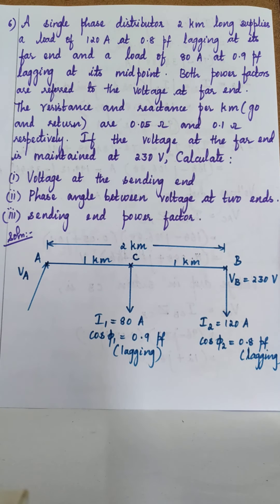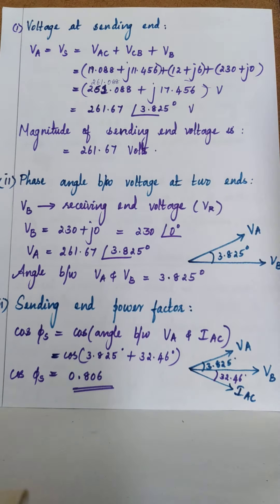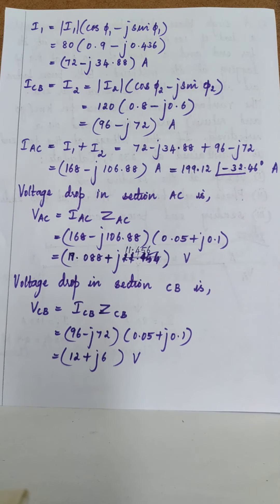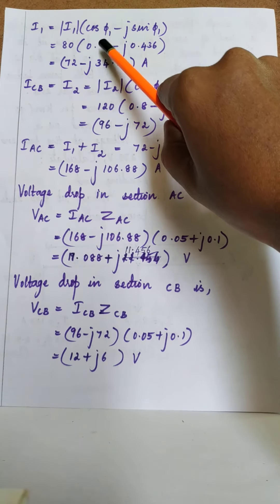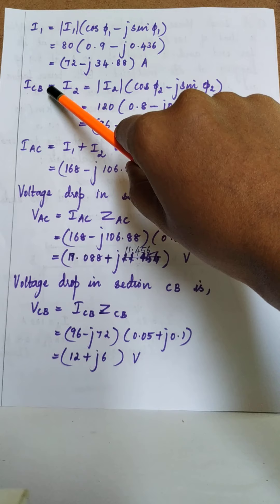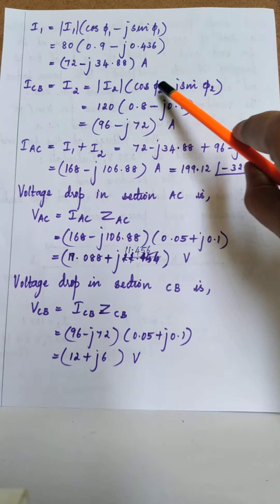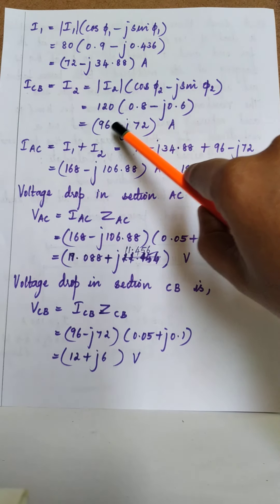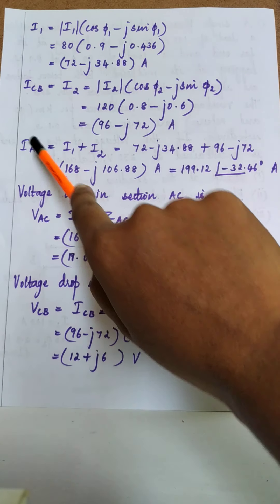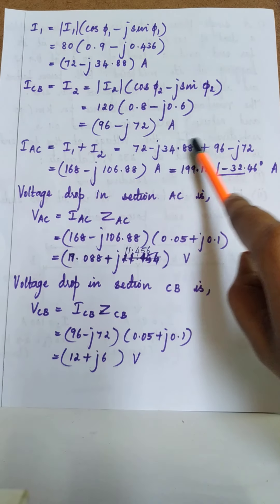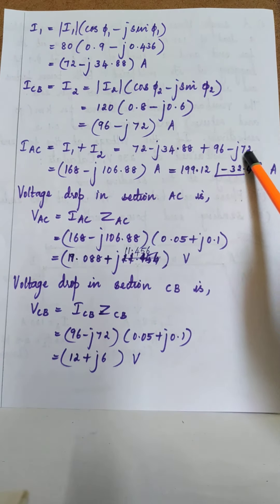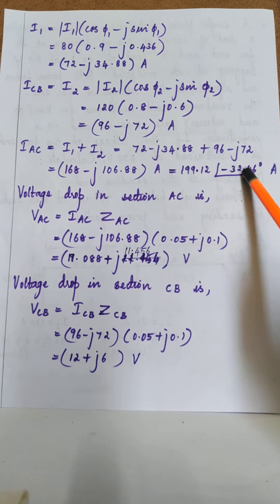Let us write I1 and I2 in complex form. I1 = |I1| (cos φ1 − j sin φ1) = 72 − j34.88 Ampere. I2, which is ICB, = |I2| (cos φ2 − j sin φ2) = 96 − j72 Ampere. Therefore the sending end current IAC = I1 + I2. We write IAC both in rectangular and polar form, since we need the angle for calculating the sending end power factor.